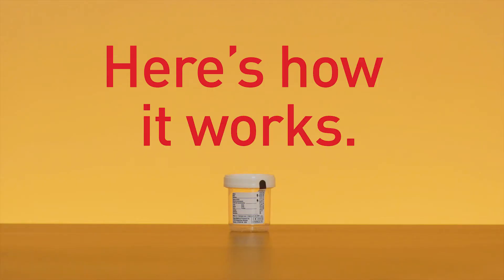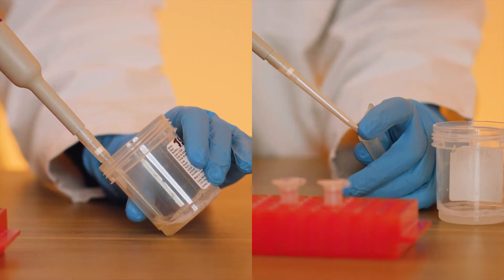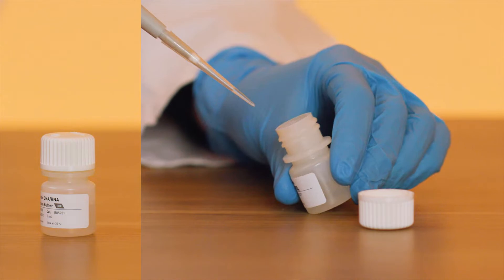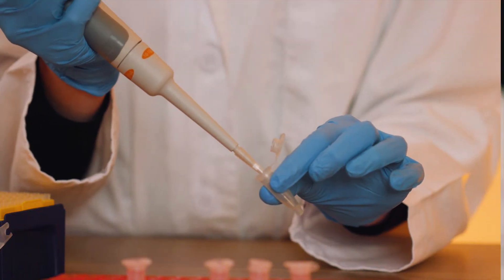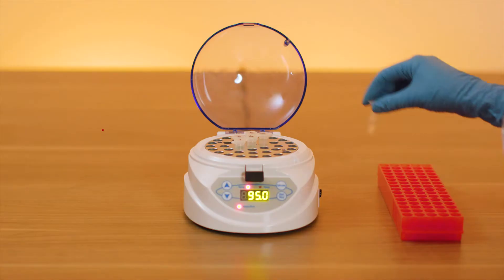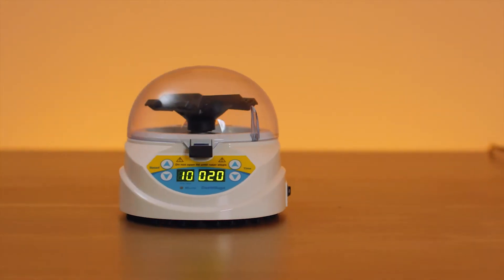Here's how it works. Start by transferring the saliva samples into 1.5 milliliter tubes. Then add the 10X enzymatic extraction buffer to each and mix. Let that sit for 15 minutes at room temperature, then heat for 10 minutes, then centrifuge.